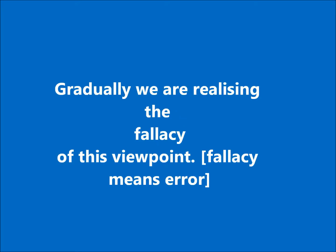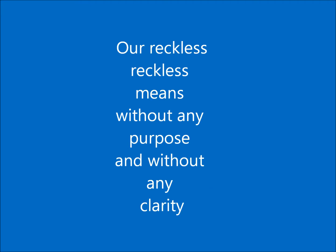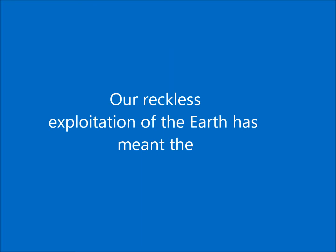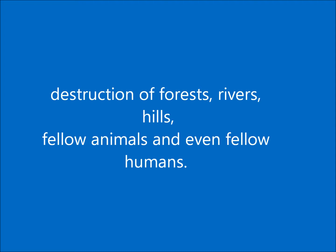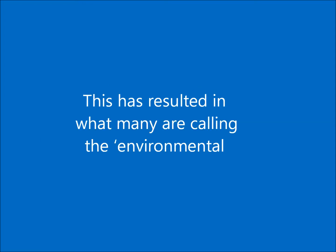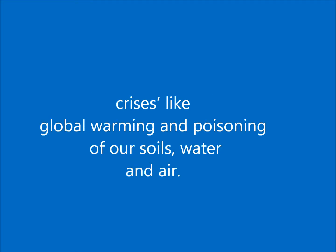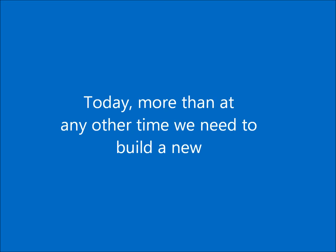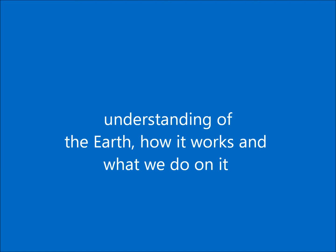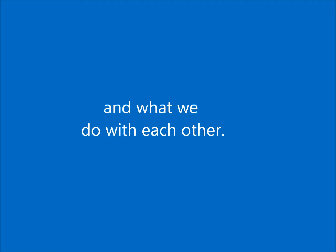We have looked at the earth as a storehouse of resources which we can exploit and use at will. Gradually we are realizing the fallacy — the error — of this viewpoint. Our reckless exploitation of the earth, reckless meaning without any purpose or clarity, has meant the destruction of forests, rivers, hills, fellow animals and even fellow humans. This has resulted in what many are calling the environmental crisis, like global warming and the poisoning of our soils, water and air.